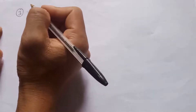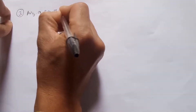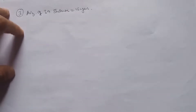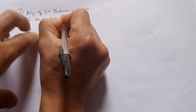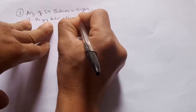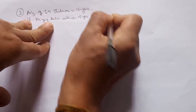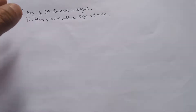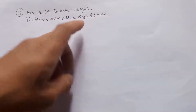Question number 3 is usually an age-related question. Suppose the average age of 39 students was 15 years. If the age of the teacher is added, the average becomes 15 years and 3 months. What is the age of the teacher?